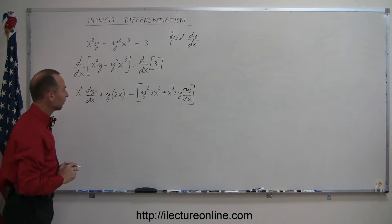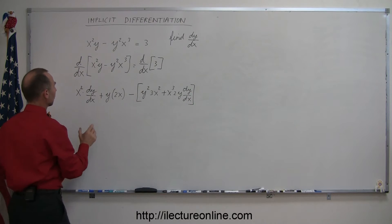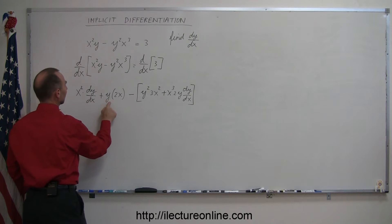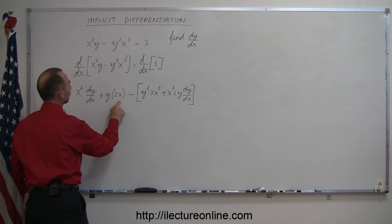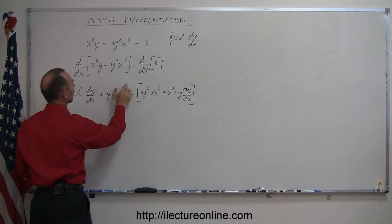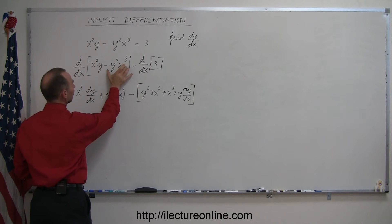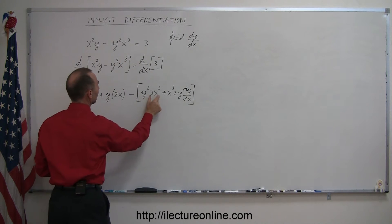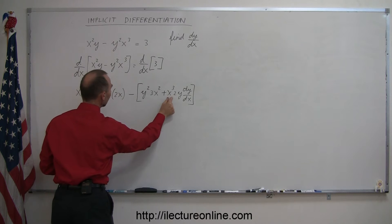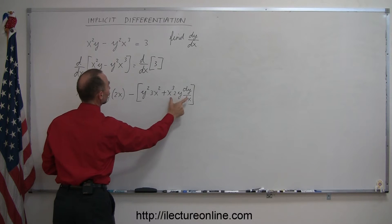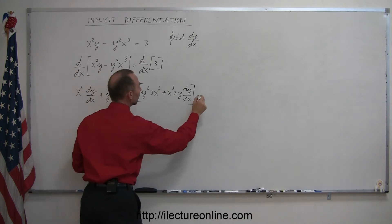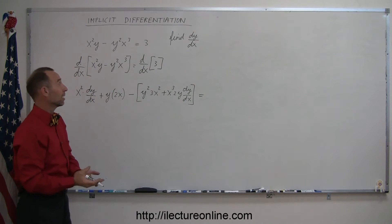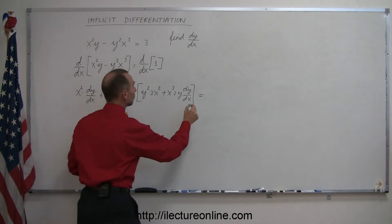So we have the derivative of this: the first times the derivative of the second, plus the second times the derivative of the first — minus the derivative of this second product, which is also a product, so it's the first times the derivative of the second, plus the second times the derivative of the first. And that equals the derivative of the right side, and the derivative of a constant is 0.